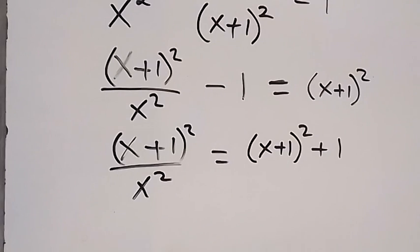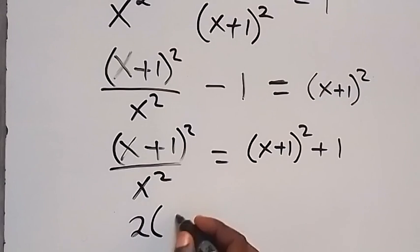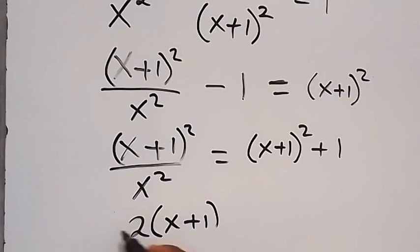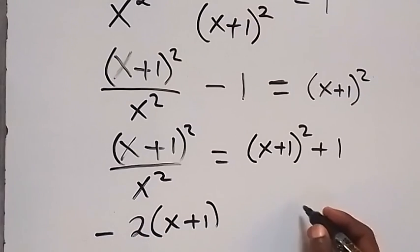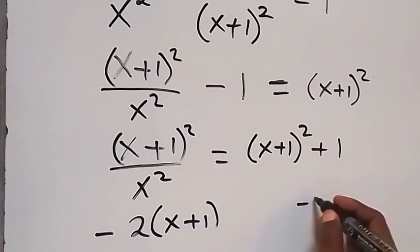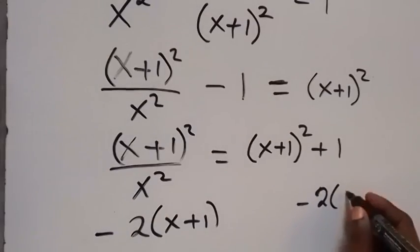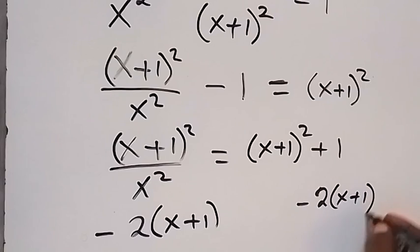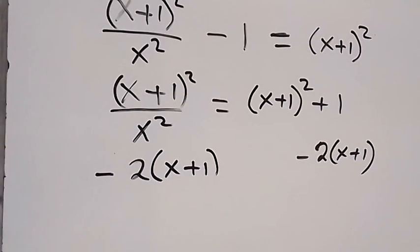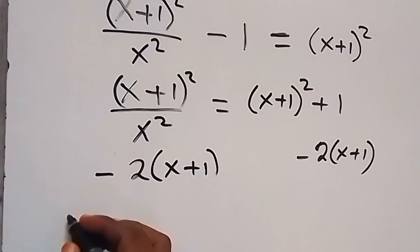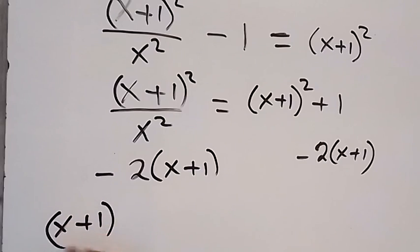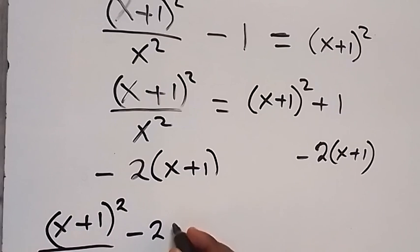From here, let's subtract 2 times bracket x plus 1 from both sides. So, subtract this on this side and also subtract 2 times bracket x plus 1 on both sides. Then, this equation becomes x plus 1 all squared over x squared, then minus 2 times bracket x plus 1.